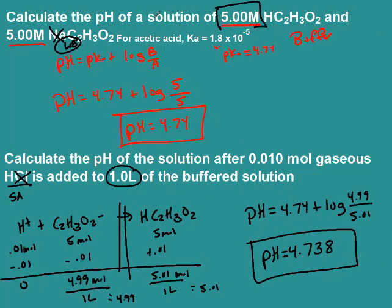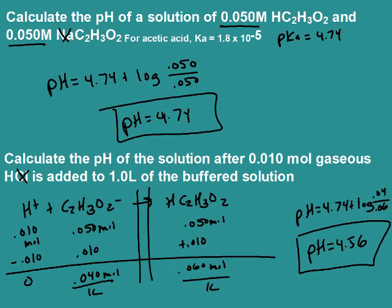Notice the change is about 0.2 versus a second ago when our change was basically zero. We had a higher concentration of acid and base on our buffer, which was able to withstand the changes in pH much better than the smaller concentrations of acid and base.